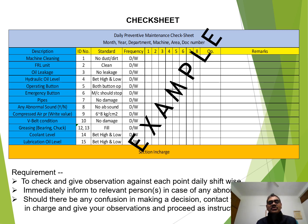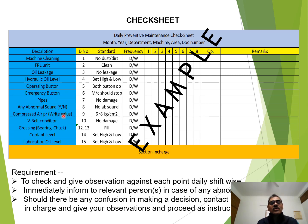The requirement is to check and give an observation against each point, on a daily shift basis, for each point we need to give our judgment. As mentioned before, immediately inform the relevant person in case any abnormality is observed. For example, for abnormal sound — the standard is no abnormal sound — but if you are finding any abnormal sound, immediately inform maintenance, your supervisor, or the in-charge.